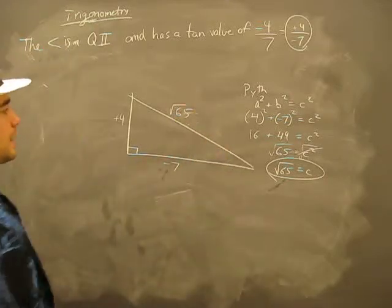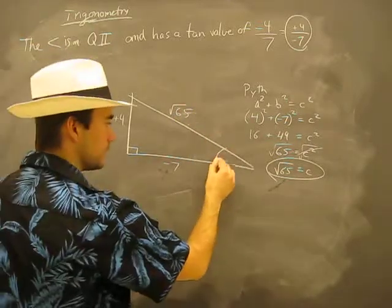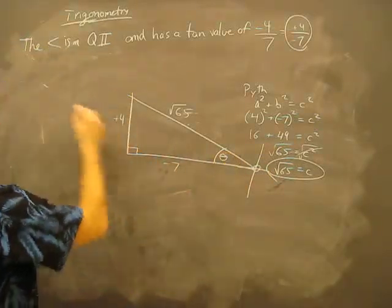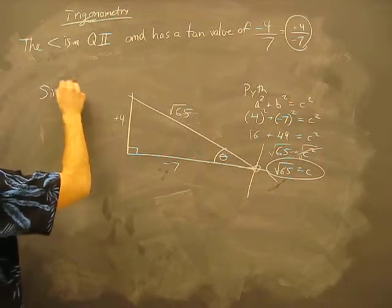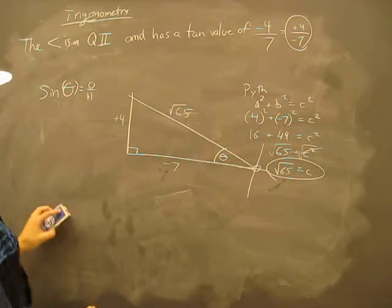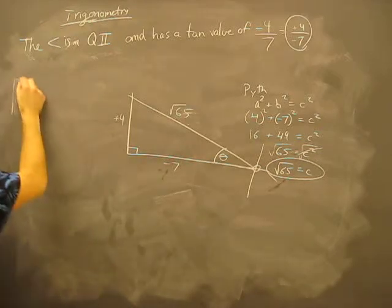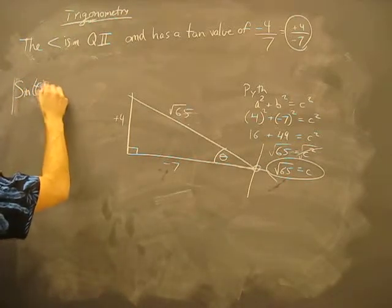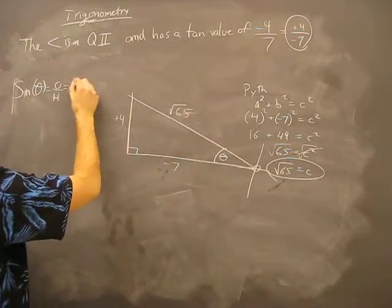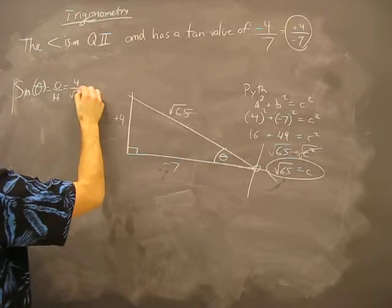Alright, so what do we have now? Our angle theta, remember this is our axis and there's zero, so theta. The sine of theta is opposite over hypotenuse. You know what? I'll move that over a little bit. The sine of theta is opposite over hypotenuse.